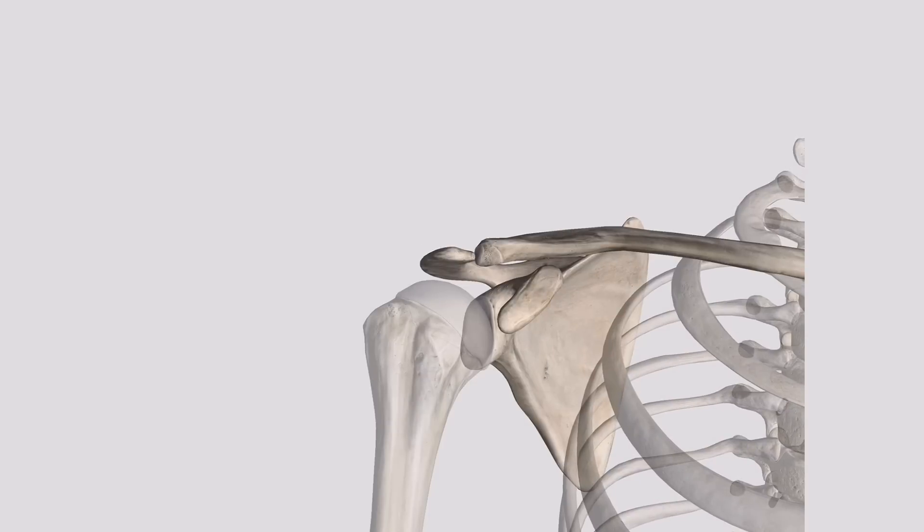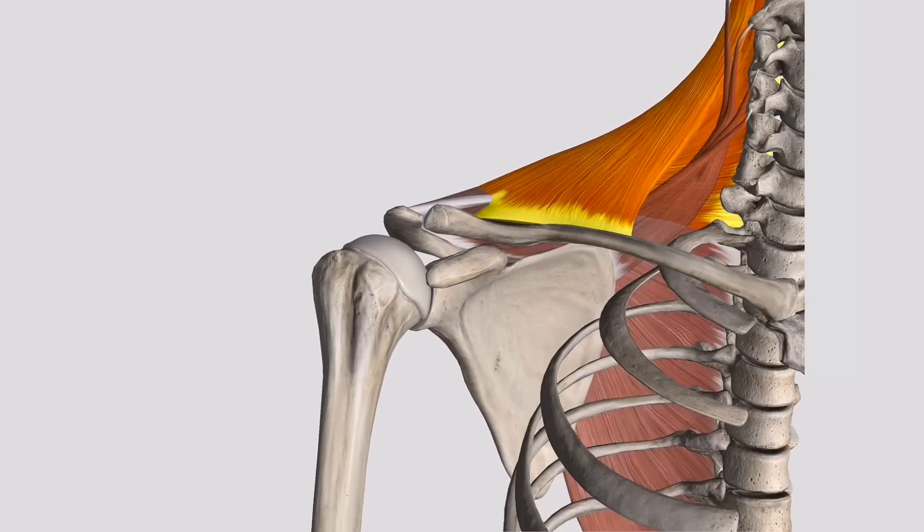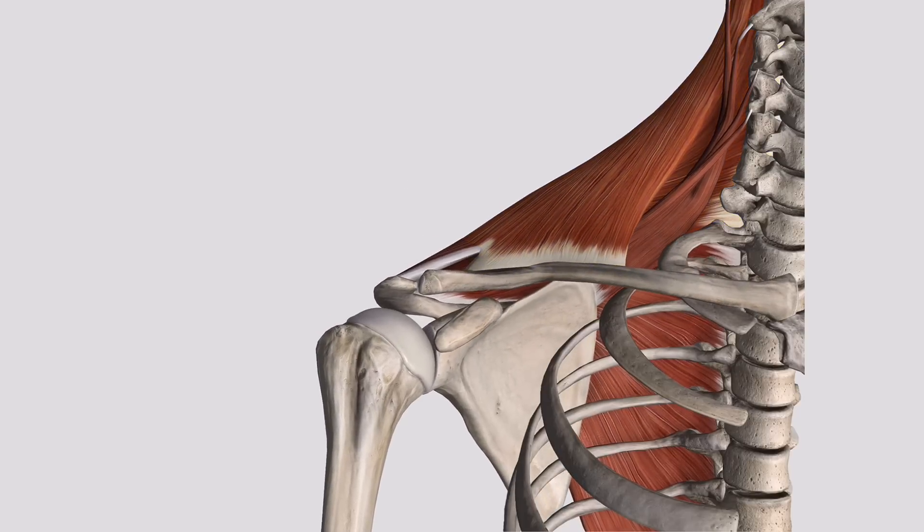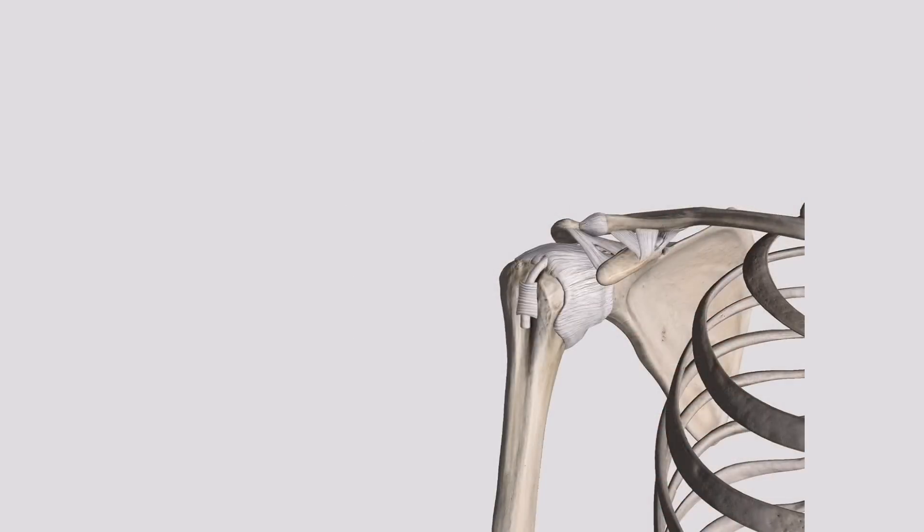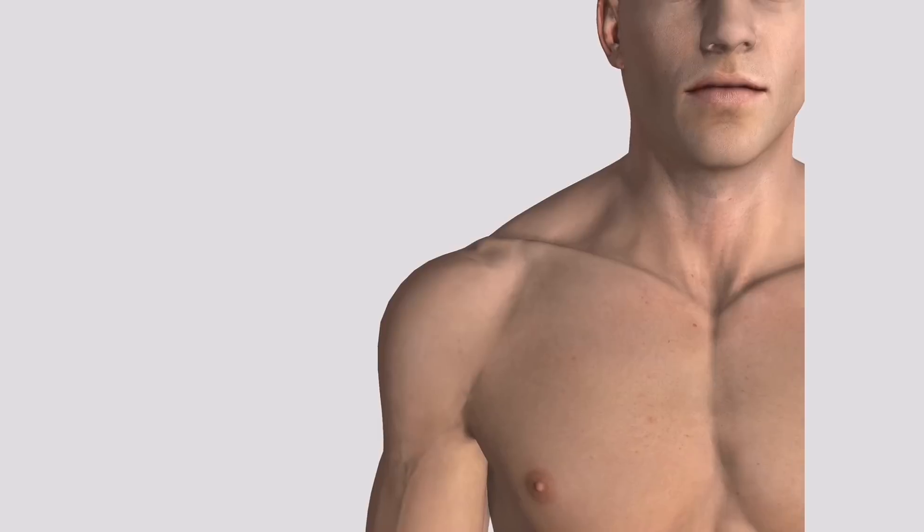This small joint offers stability to the region of the shoulder and allows for vertical gliding movements. A direct blow to the AC joint can result in varying degrees of injury.